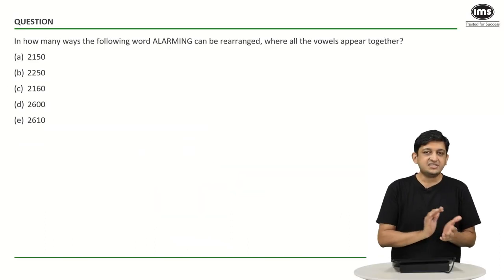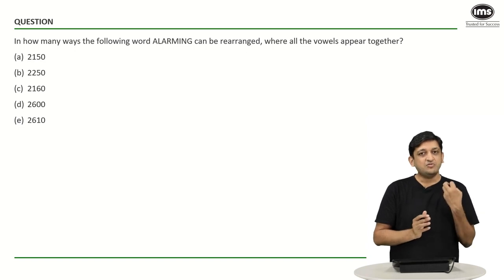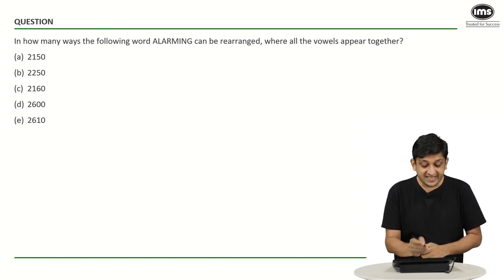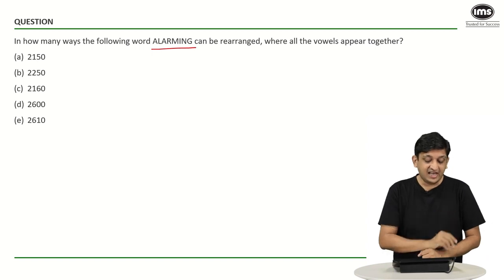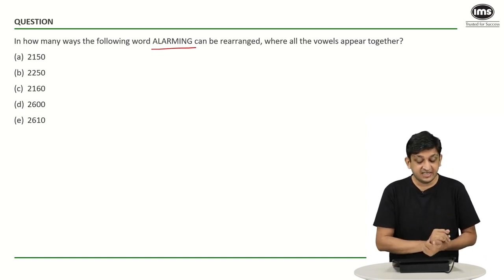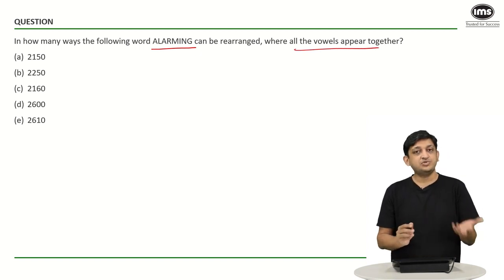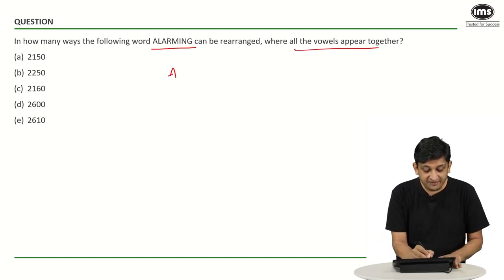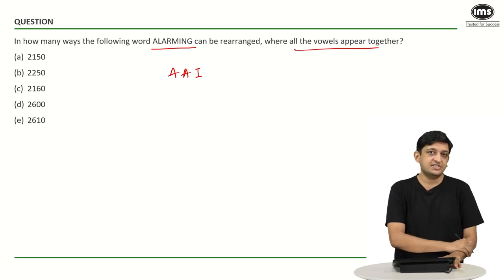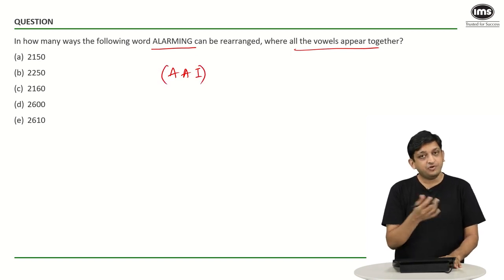This is again a rather straightforward question if you know how to solve questions involving arrangements with repetition. The word is A, R, L, A, R, M, I, N, G — there are eight letters present here. We need to ensure that the vowels are always together. The vowels we have here are two A's and one I. So these three are the vowels and they have to be together. In addition to that, we also have L, R, M, N and G as the consonants, and we are perfectly okay with the consonants being wherever they are.